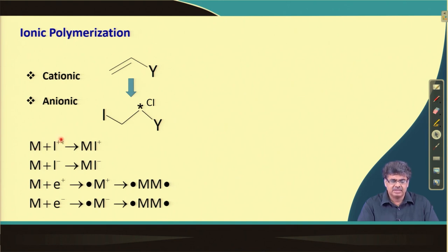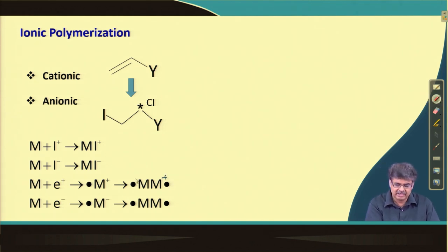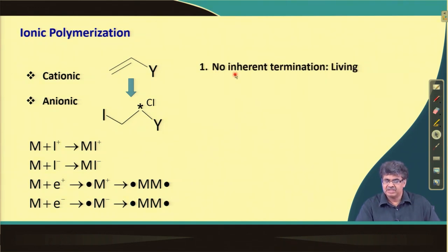We can use an ion directly — a cation or an anion — or we can use an electron transfer process to generate a radical ion, from which we can obtain a bianion or a bicationic species with active groups at both ends. The fundamental difference from radical polymerization is that inherent bimolecular termination is not possible in ionic polymerization, because two cations or two anions cannot interact with each other.